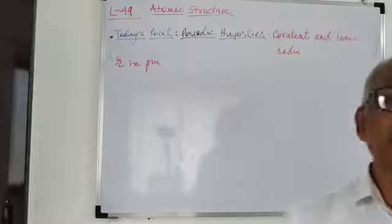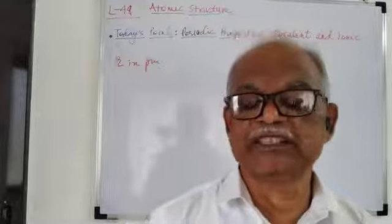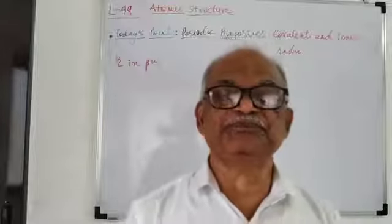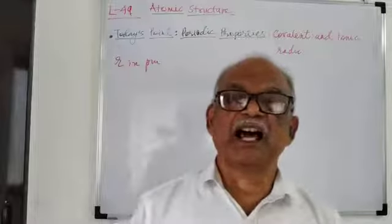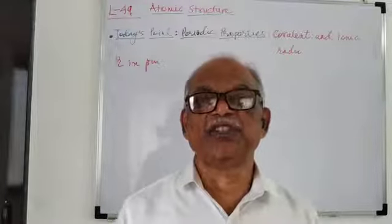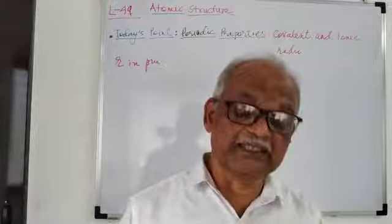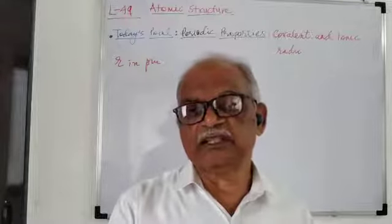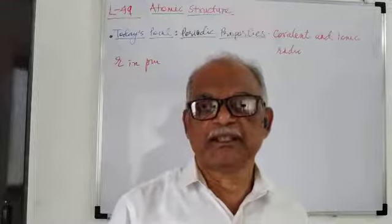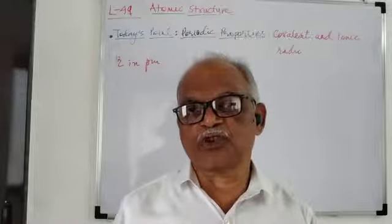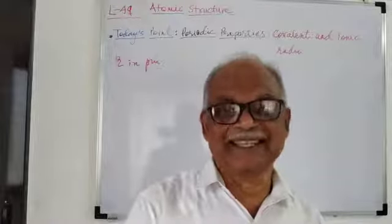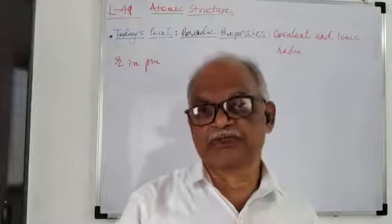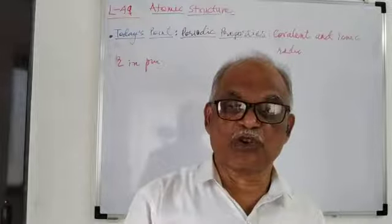In non-polar compounds, covalent radii are not affected by any charge. But if we consider ionic radii, they are influenced by charge. If we consider the cation, the size of the cation is not much influenced by the size of the anion. But the size of the anion is influenced strongly by the size and charge of the cation.